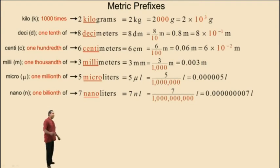6 centimeters can be written as 6 times 10 to the negative 2 meters, because 10 to the negative 2 represents one hundredth. 3 millimeters can be written as 3 times 10 to the negative 3 meters, because 10 to the negative 3 represents one one thousandth.